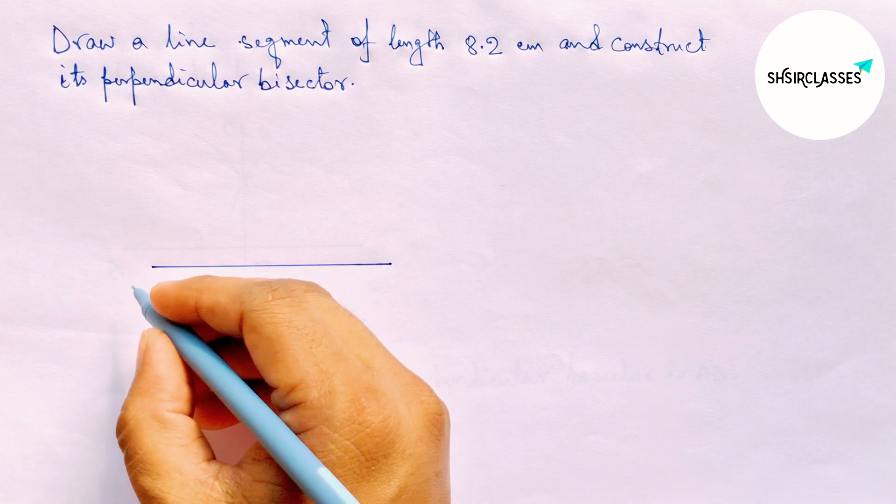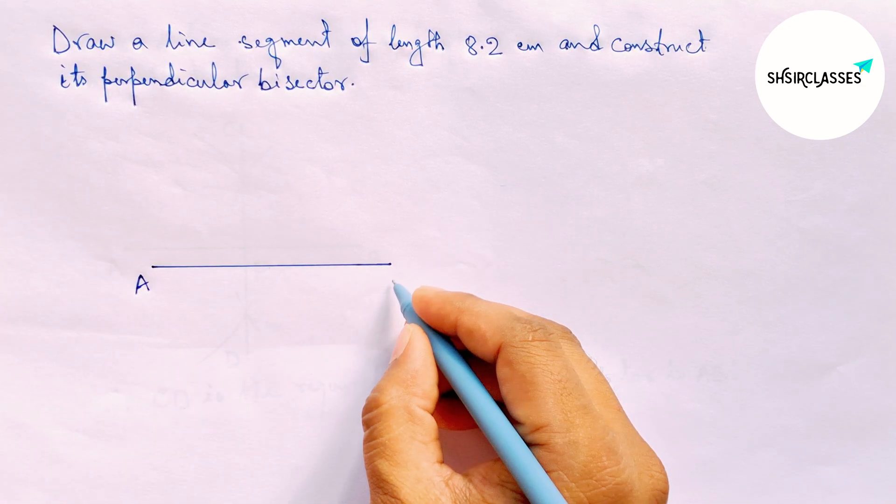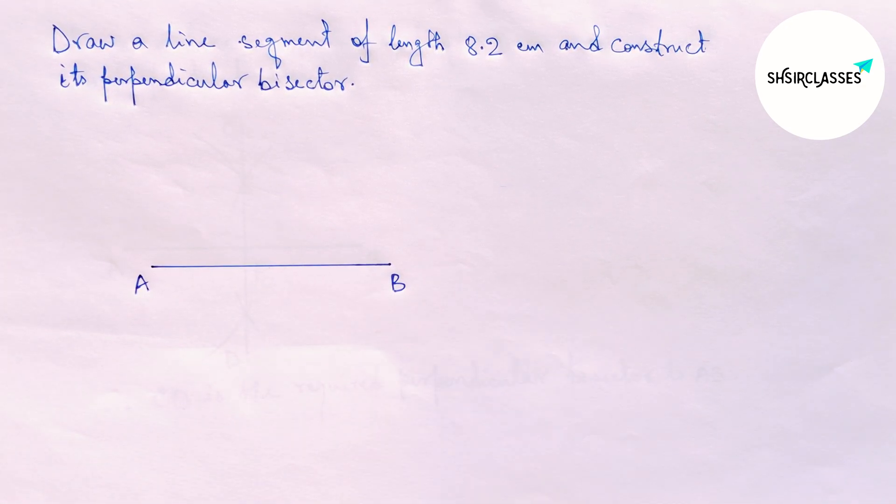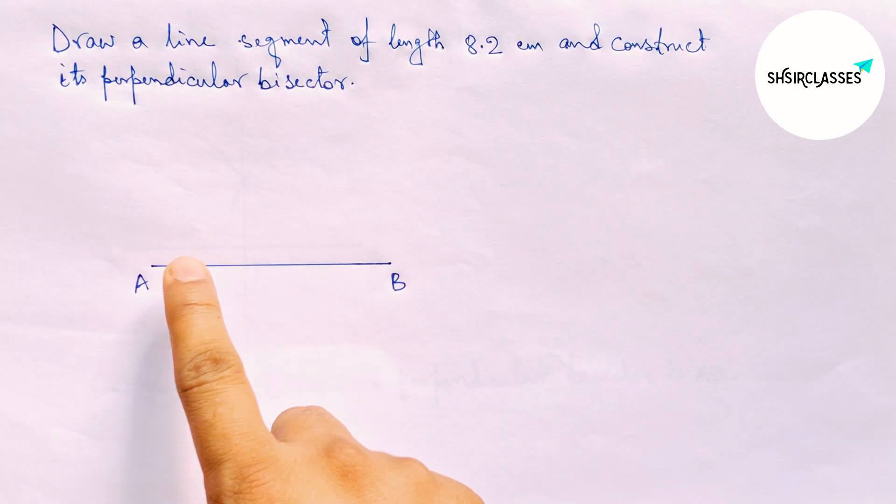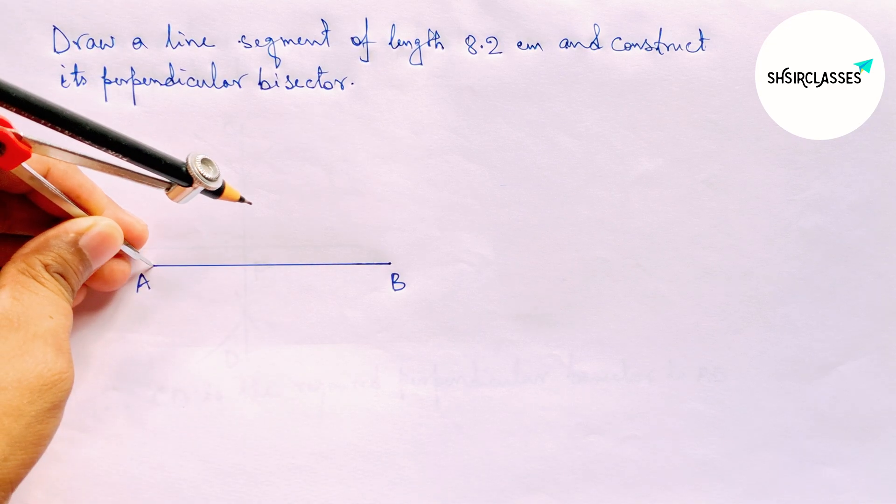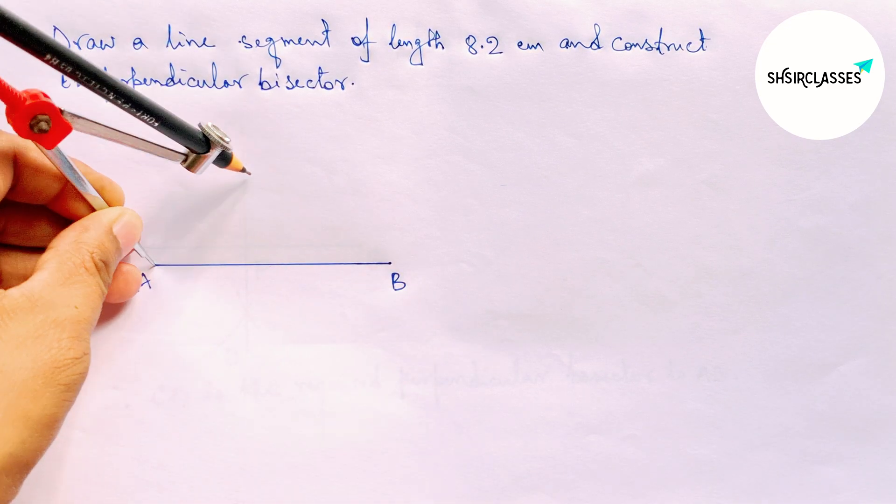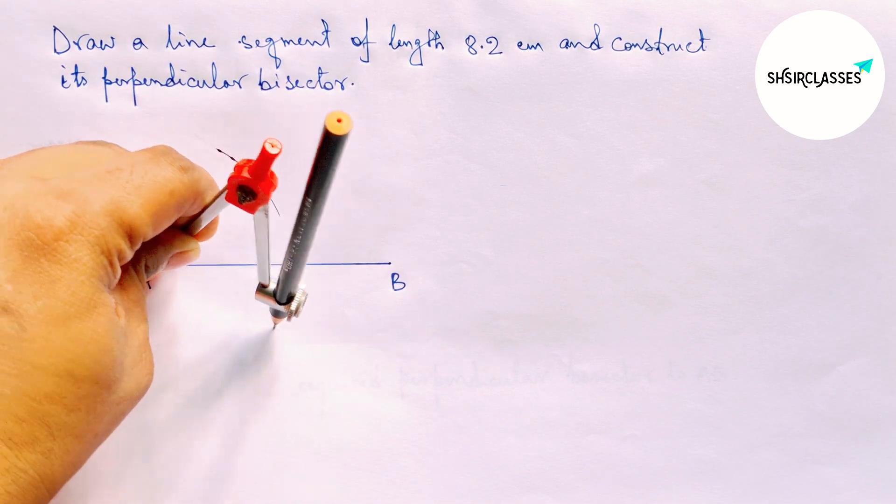Labeling here A and B. Now construct its perpendicular bisector to the line AB with the help of a compass. Put the compass on point A, taking greater than half of AB, and drawing an arc.